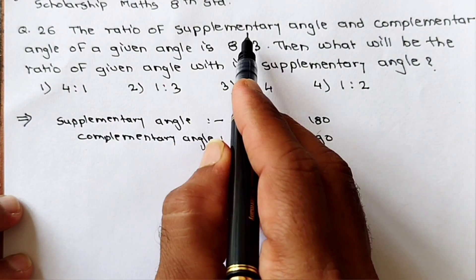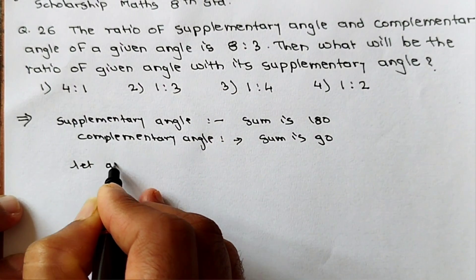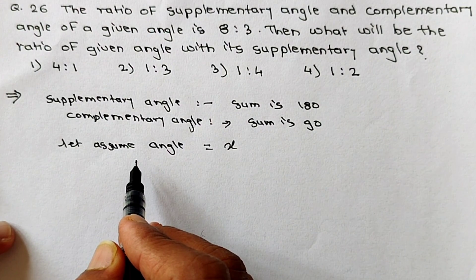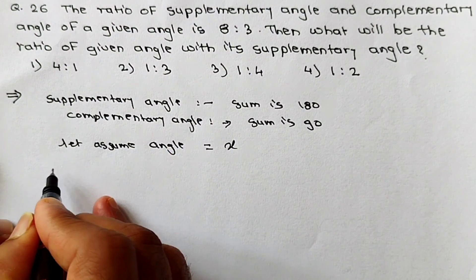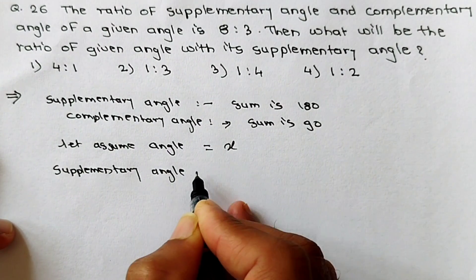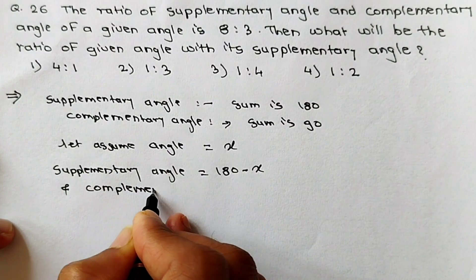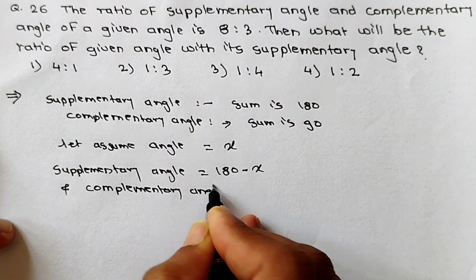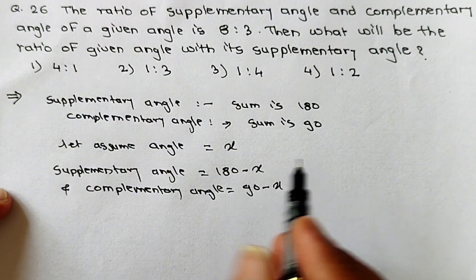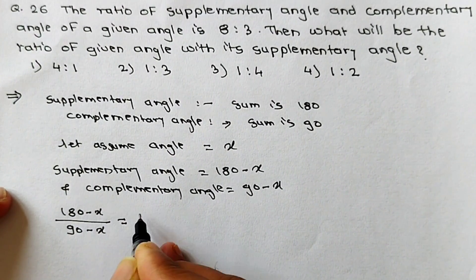The ratio of the supplementary angle and the complementary angle of a given angle is given. Let's assume the angle is x degrees. The supplementary angle of x will be 180 minus x, and the complementary angle will be 90 minus x. So the ratio gives us: (180 minus x) upon (90 minus x) equals 8 upon 3.